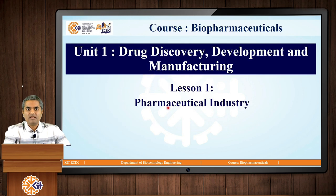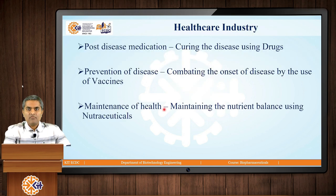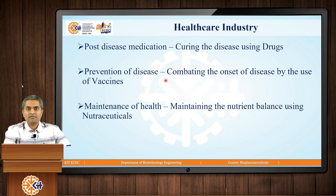Now, let us start with lesson number 1, that is pharmaceutical industry. When we consider the pharmaceutical industry, the broader umbrella is the healthcare industry. The healthcare industry includes 3 different types of segments. One is post-disease medication, where the drugs are used to cure the disease. The second one is prevention of disease — that is, we use vaccines to combat the onset of any disease. And the third important segment is nutraceuticals, which are used in maintenance of health. It contains different types of vitamins and related compounds.